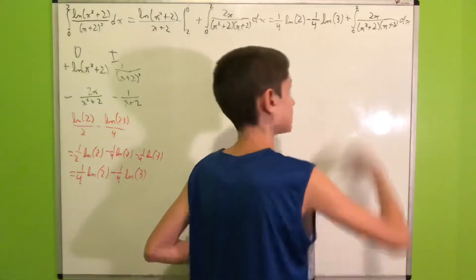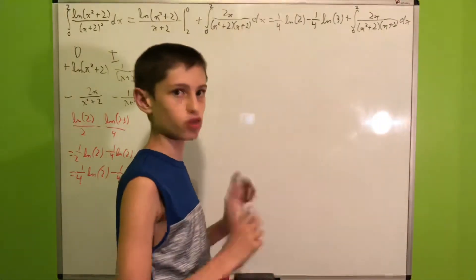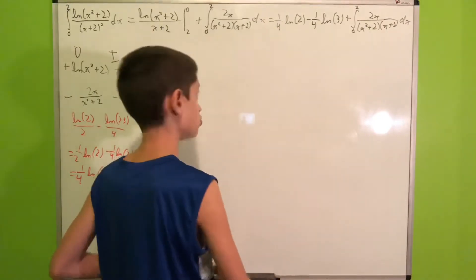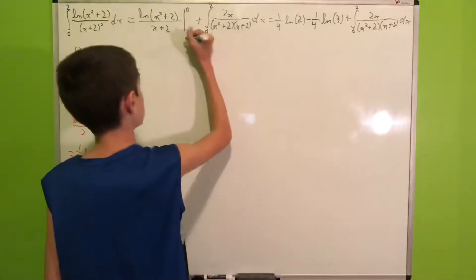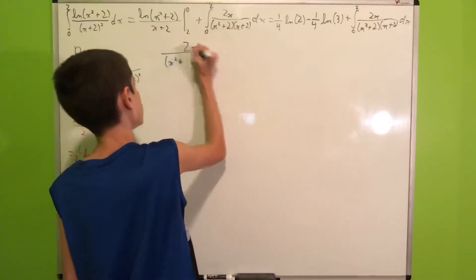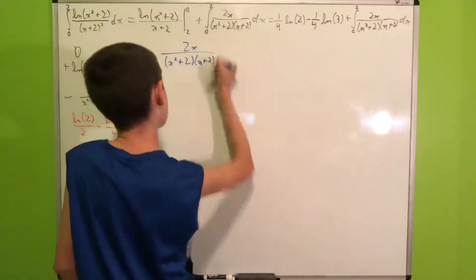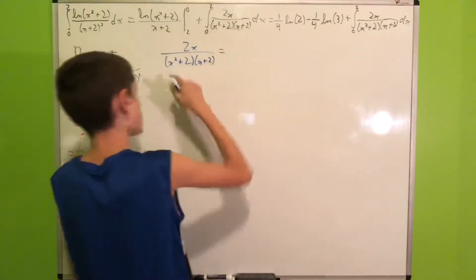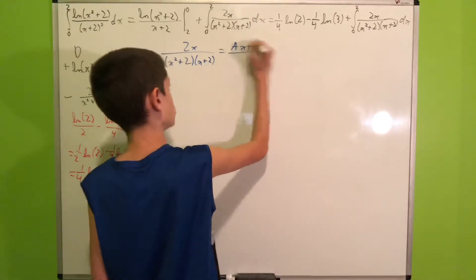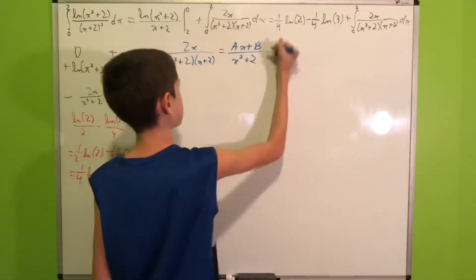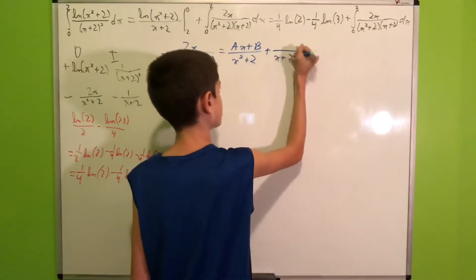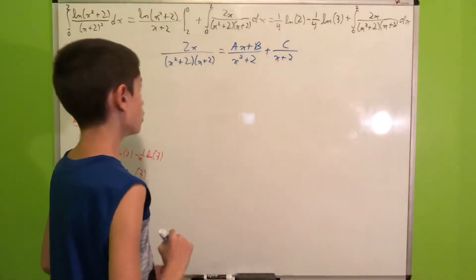This integral can easily be evaluated using partial fractions decomposition, and this is exactly what we'll do. So we have 2x all over (x² + 2)(x + 2). For x² + 2 we'll have some Ax + B in the numerator because it's an irreducible quadratic, and for x + 2 we'll have some constant C in the numerator because it's a linear term.